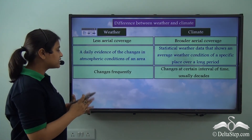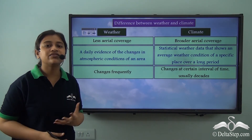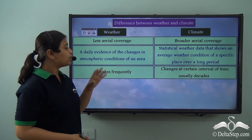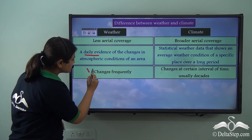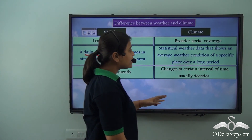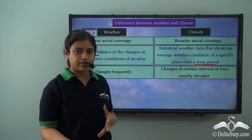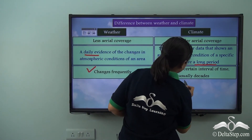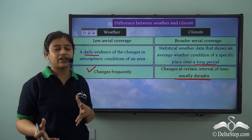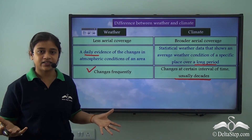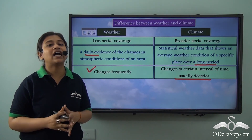The third difference is that weather changes very frequently — it is a daily evidence and changes very frequently. While climate is decided over a very long period of time, it does not change that frequently. It is usually accounted for after studying and reading the weather conditions of an area for nearly a decade. So ten years of weather data can help us decide the climate of that area.